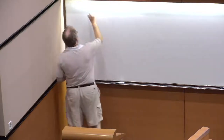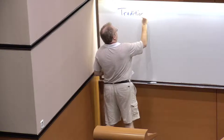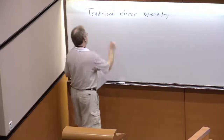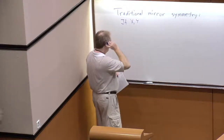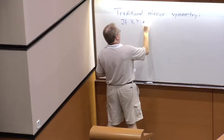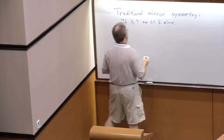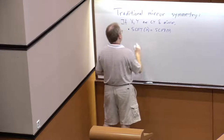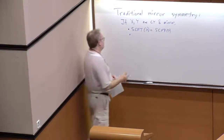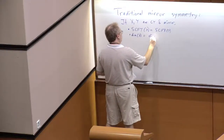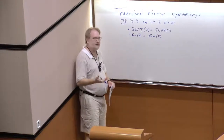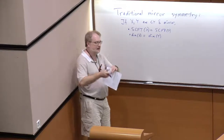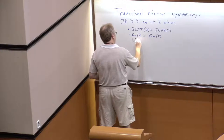In traditional mirror symmetry — and when I say spaces I really mean Calabi-Yaus — if X and Y are Calabi-Yau and mirror, then there are a number of basic properties. For example, the superconformal field theory of X will match the superconformal field theory of Y. As a consequence, the central charges are the same, so the dimensions will match. Since elements of Dolbeault cohomology correspond to operators in the conformal field theory, the Dolbeault cohomology groups will match. The Hodge diamond will essentially flip along a diagonal: H^{p,q} of one will be H^{n-p,q} of the other.